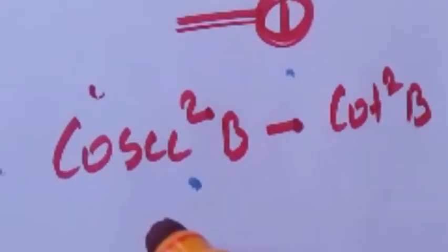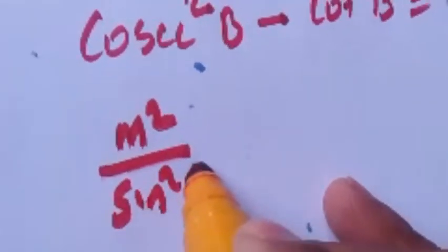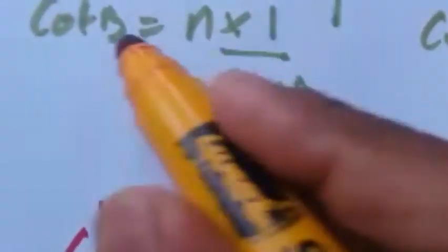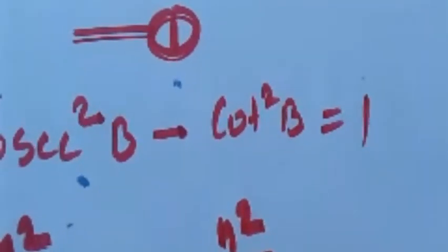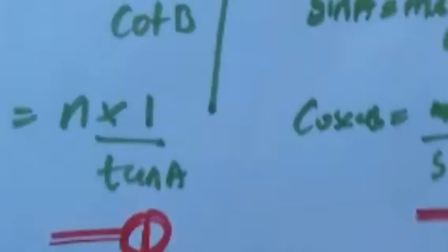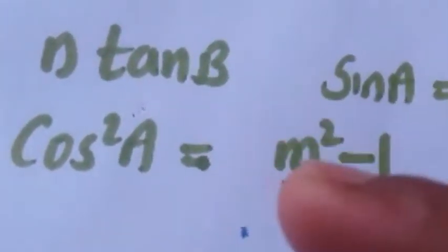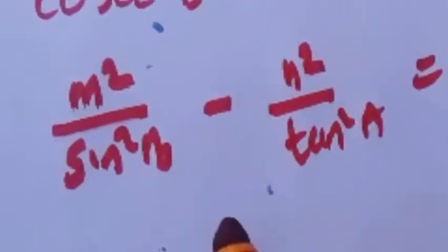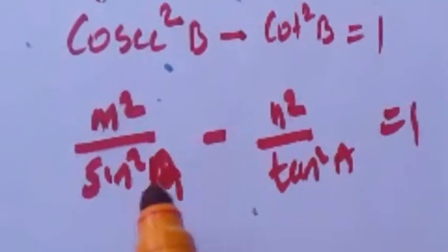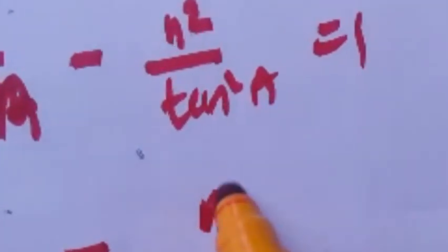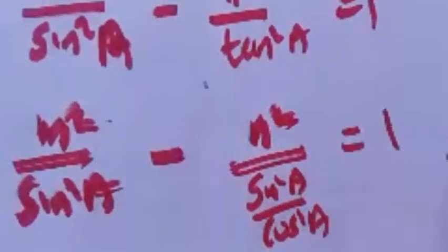Cosec B is m/sin A, so cosec²B will be m²/sin²A. Cot B is n/tan A, so cot²B will be n²/tan²A. Substituting into the identity: m²/sin²A minus n²/tan²A is equal to 1. Now we can replace tan² with sin²/cos²A.